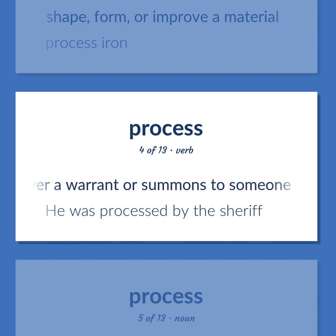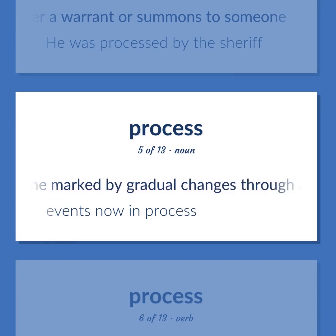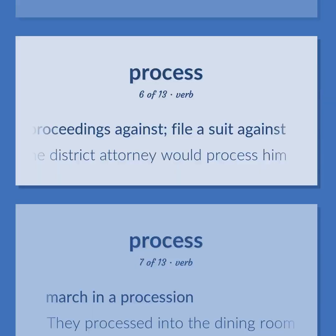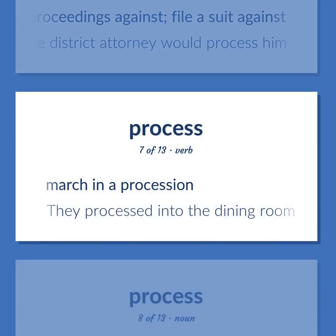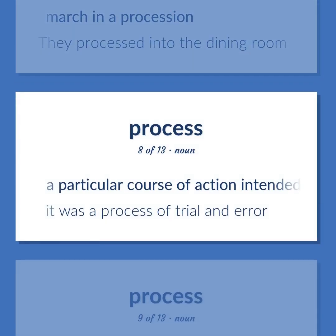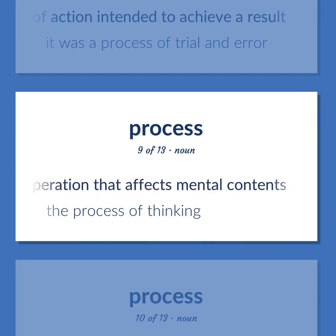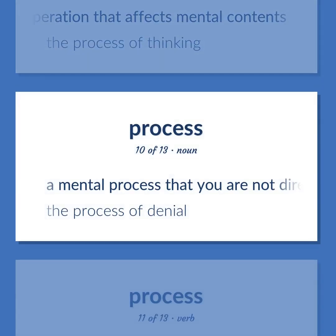Process: deliver a warrant or summons to someone — he was processed by the sheriff. A sustained phenomenon or one marked by gradual changes through a series of states — events now in process. Institute legal proceedings against; file a suit against — he was warned that the district attorney would process him. March in a procession — they processed into the dining room. A particular course of action intended to achieve a result — it was a process of trial and error. Psychology: the performance of some composite cognitive activity — the process of thinking. A mental process that you are not directly aware of — the process of denial.